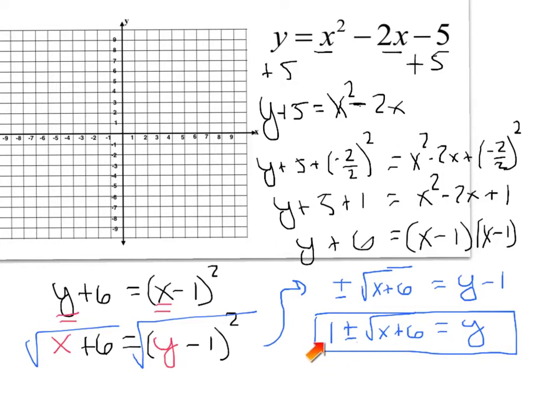And just like any other transformation, this guy right here is going to be our y shift and it's positive 1. So I'm actually going to be able to plot a point at negative 6, positive 1.